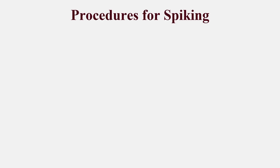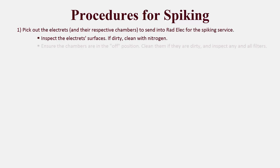Let's move onward to the specific procedures for spiking. The first step is to pick out the electrets and their respective chambers to send in to Radelec. Inspect the surface of each electret to make sure that it's clean — if not, clean it off with nitrogen. Also, inspect the chambers you're going to use, make sure that they're in the off position, and that any filters in those chambers are in good condition.